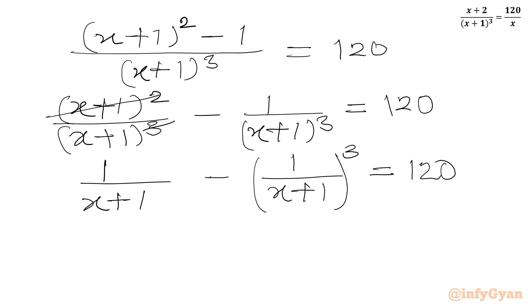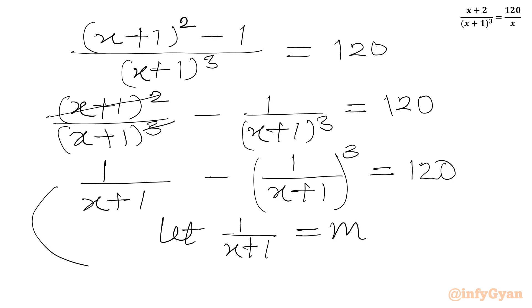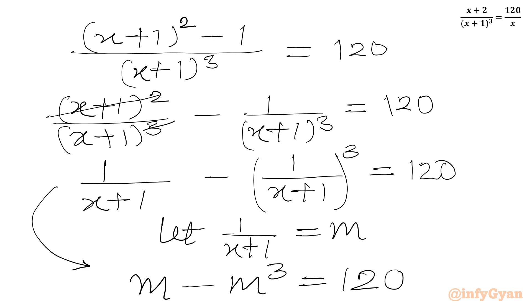Now we can use the substitution: let m = 1/(x + 1). So we can write our equation in m as m − m³ equal to 120.